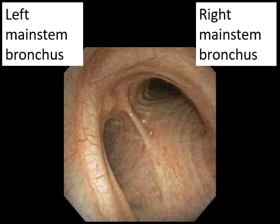This is the right main stem bronchus and the left main stem bronchus. It's an inside view of the bronchi — what they look like from the inside. You're looking at the mucosal side of the bronchus.